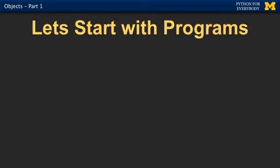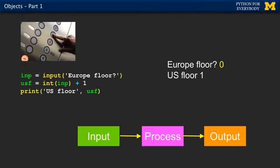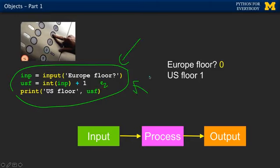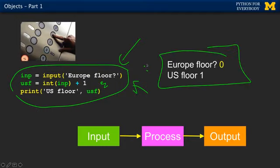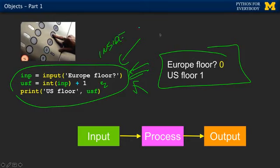Let's go back to the beginning and start with programs we started with. Here was our first program that handled input, processing, and output. You can draw a boundary around this program — there's the inside stuff and the outside world. To the outside world, this program does something. If this is the outside world, we do not have to keep track of the detail of this. Like, we've got this program, we installed it on our computer, we're confused about floors and we're in Europe — yeah, I'm on floor zero, what would be the equivalent US floor? And so there is this notion of inside and outside where we hide the detail. Programmers have to worry about this detail, but a lot of people don't.